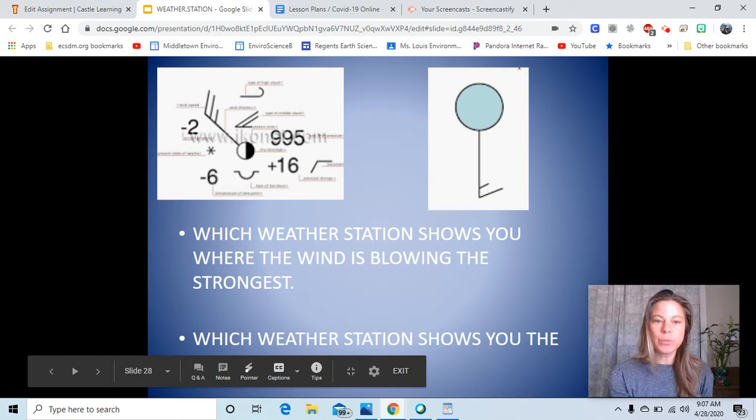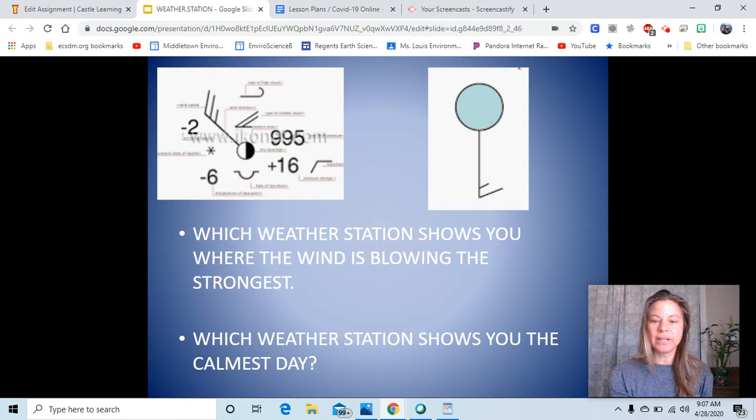So which weather station, based on looking at the little feathers off the tail, would show you where the wind is blowing the strongest? We've got this guy here, and this is how many knots? Ten plus ten plus five, twenty-five. And this one is ten plus five, fifteen. So this one would show you that the wind is blowing the strongest.